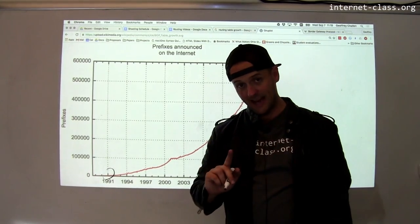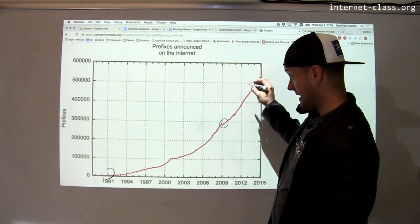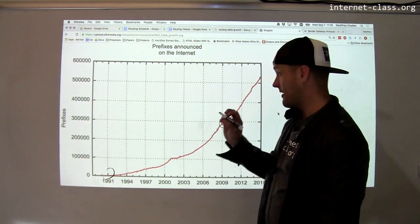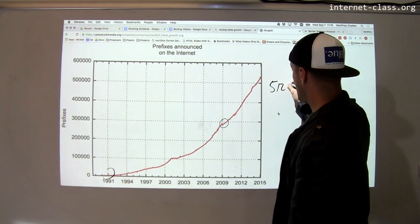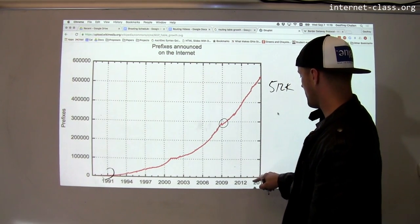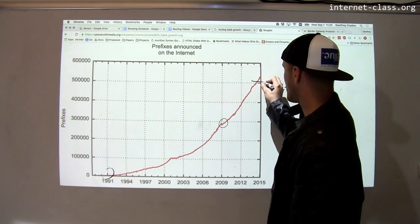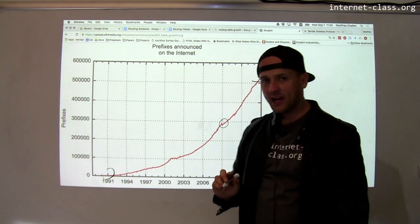Now remember, routers have this limitation that they could only route quickly 512,000 prefixes. And look what happened right around August of 2014, we hit this number.